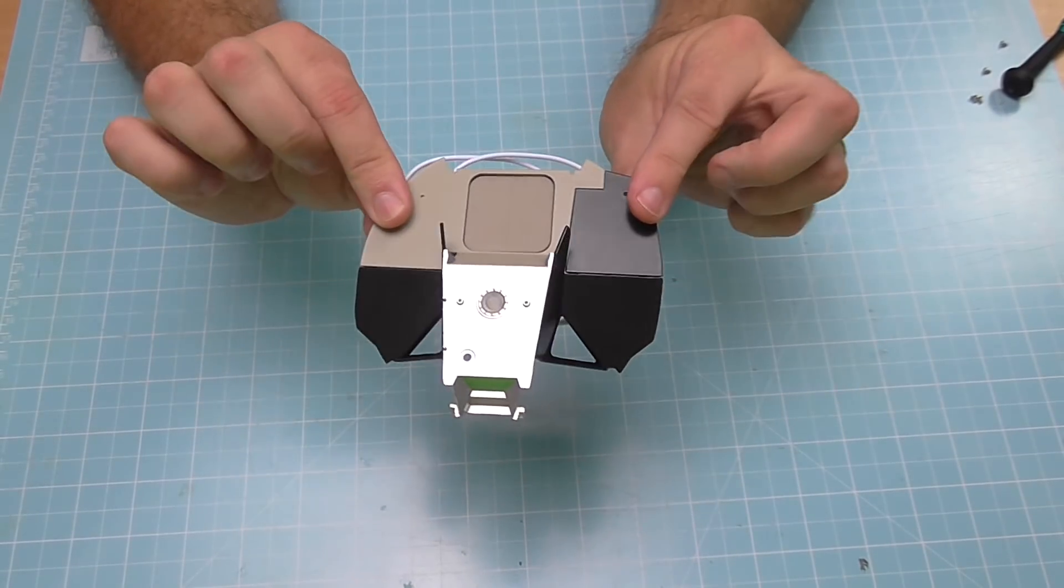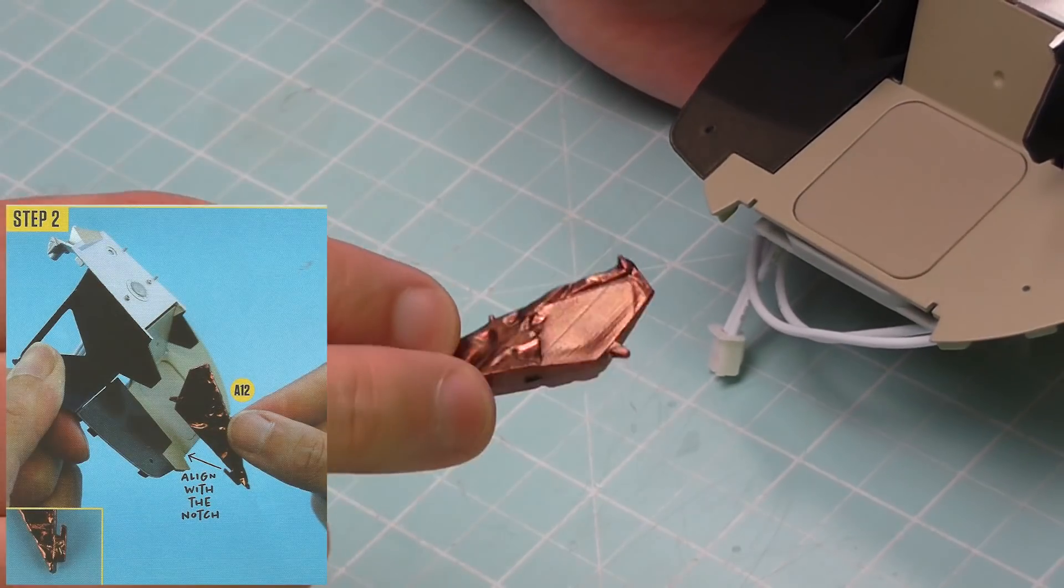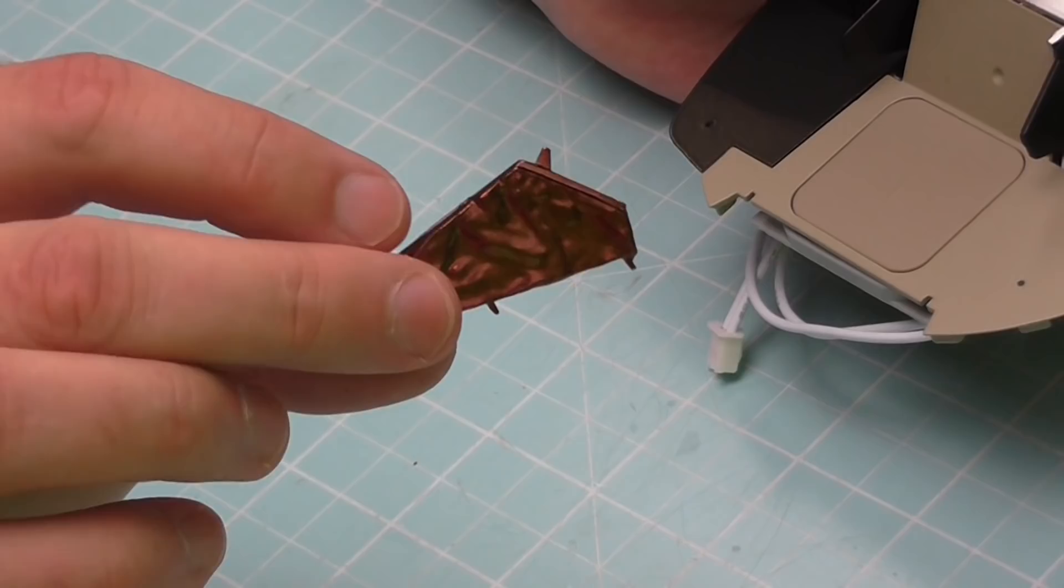And there we go, look, that's both of those sections in, looking like that from that side. If I just spin this around, looking just like that. So now we're going to be putting in the foil section.